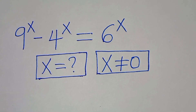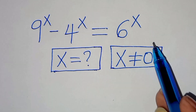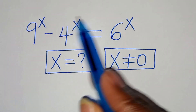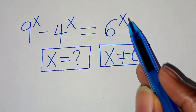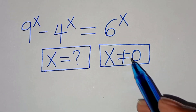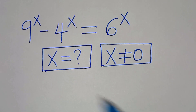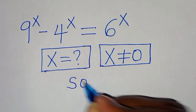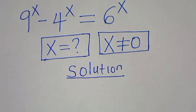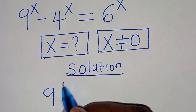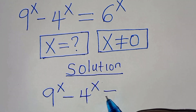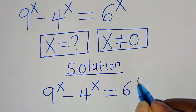Hello everyone, you're welcome to solve this nice exponential equation which is 9 to the power of x minus 4 to the power of x, this is equal to 6 to the power of x. What is the value of x, given that x is not equal to 0? So let's provide a solution.